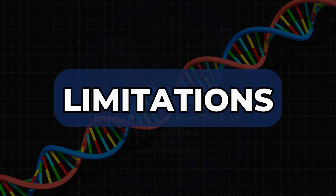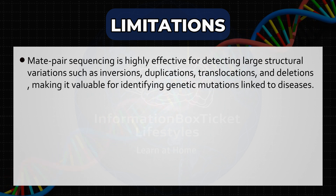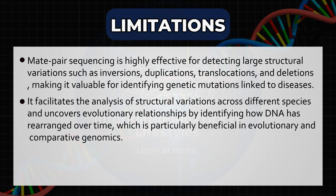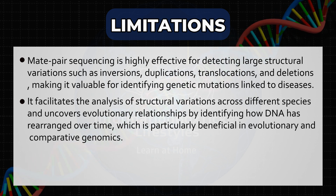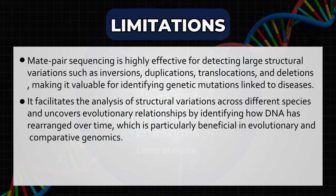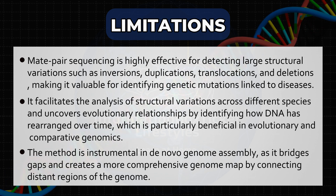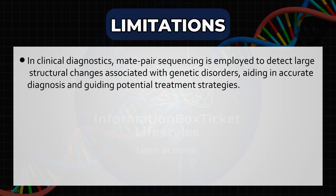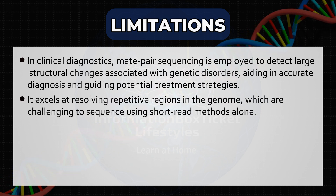Applications of Mate Pair Sequencing. Mate pair sequencing is highly effective for detecting large structural variations such as inversions, duplications, translocations, and deletions, making it valuable for identifying genetic mutations linked to diseases. It facilitates the analysis of structural variations across different species and uncovers evolutionary relationships by identifying how DNA has rearranged over time, which is particularly beneficial in evolutionary and comparative genomics. The method is instrumental in de novo genome assembly, bridging gaps and creating a more comprehensive genome map by connecting distant regions. In clinical diagnostics, mate pair sequencing is employed to detect large structural changes associated with genetic disorders, aiding in accurate diagnosis and guiding potential treatment strategies. It also excels at resolving repetitive regions in the genome, which are challenging to sequence using short-read methods alone.